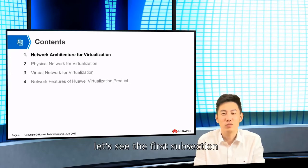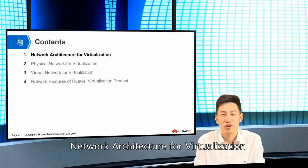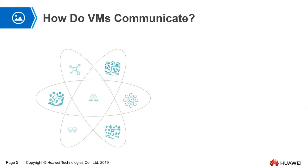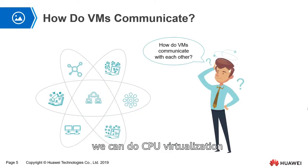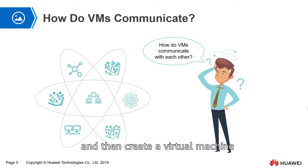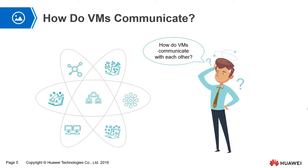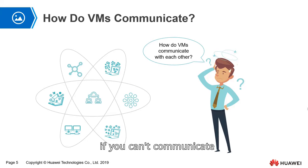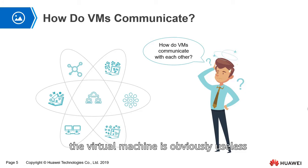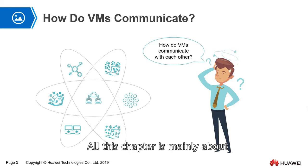Now let's see the first subsection: network architecture for virtualization. With computing virtualization, we can do CPU virtualization, memory virtualization, and IO virtualization, and then create a virtual machine. After the virtual machine is created, communication between virtual machines is required. If a virtual machine can't communicate with the outside world, it is obviously useless. So, how do virtual machines communicate with each other? This chapter is mainly about solving this problem.